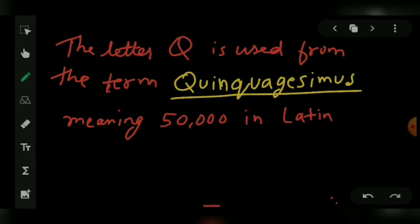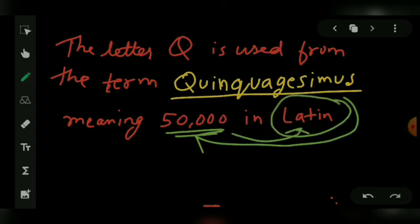The next important point is the letter Q. What is the letter Q in it? The letter Q is used from the word Quinquagiesimus, and what does this Quinquagiesimus mean? It means 50,000 in Latin. This is the important thing, so this is the letter Q used and the Q potency.